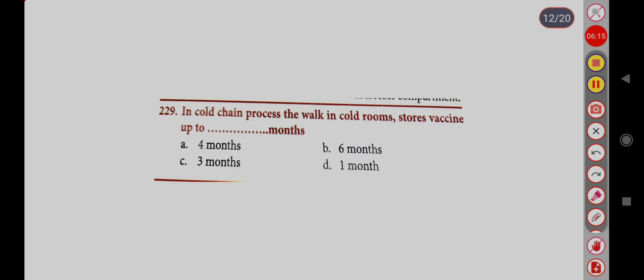In the cold chain, the cold room stores vaccines up to: Option A, 4 months; Option B, 6 months; Option C, 3 months; Option D, 1 month. Correct answer is Option C, 3 months.